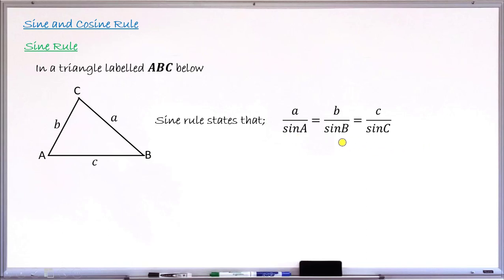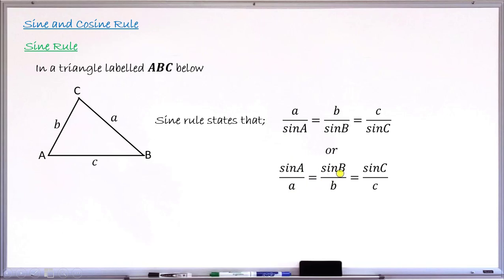You can equally rewrite this rule by taking the reciprocal — that is, instead of e over sine E, you now have sine E divided by e. It is the same also: sine B divided by the length of the side opposite, and so on. This is what the sine rule says.